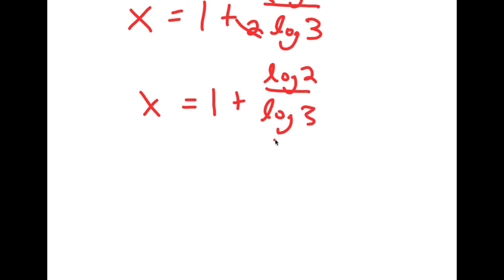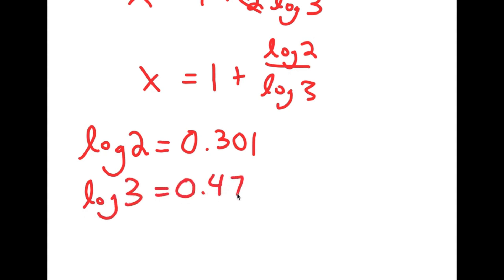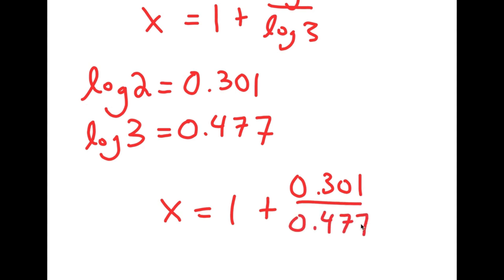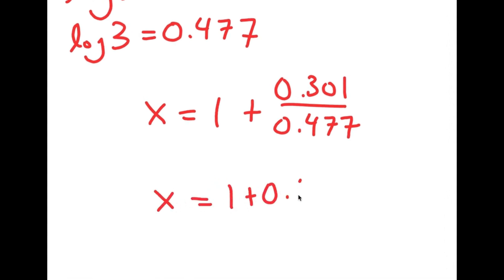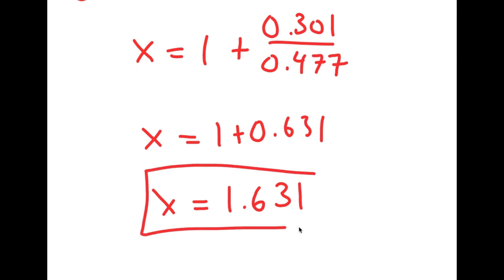So log 2 is equal to 0.301 and log 3 is equal to 0.477. I just plug these back into our equation. So I get x is equal to 1 plus 0.301 over 0.477. And 0.301 over 0.477 is 0.631. So 1 plus 0.631 is 1.631. So x ≈ 1.631 is my answer.